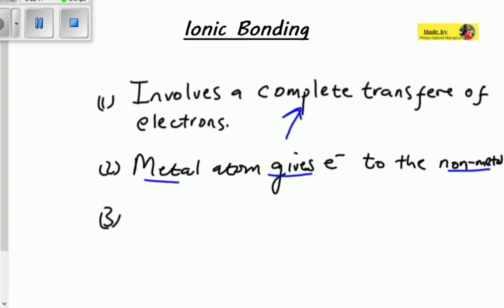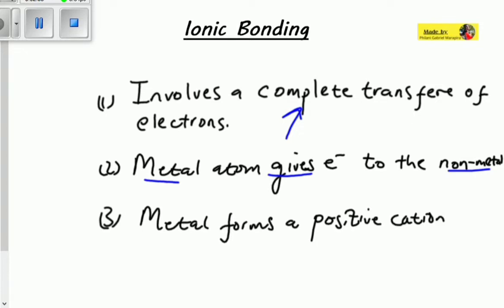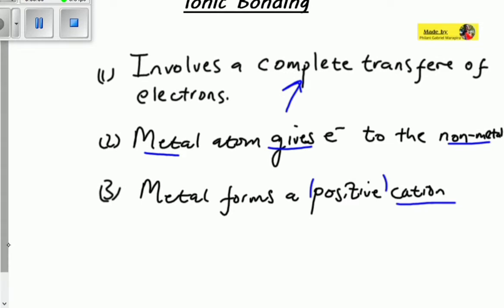Pointer number three: the metal forms a positive cation. When the metal transfers those electrons, it means it is actually losing those electrons to the non-metal. So it will have excess protons, and when you have excess protons it is called a cation — a positive cation. A cation is a type of ion which has an excess of protons and a deficiency of electrons, caused by the complete transfer of electrons from the metal atom to the non-metal.